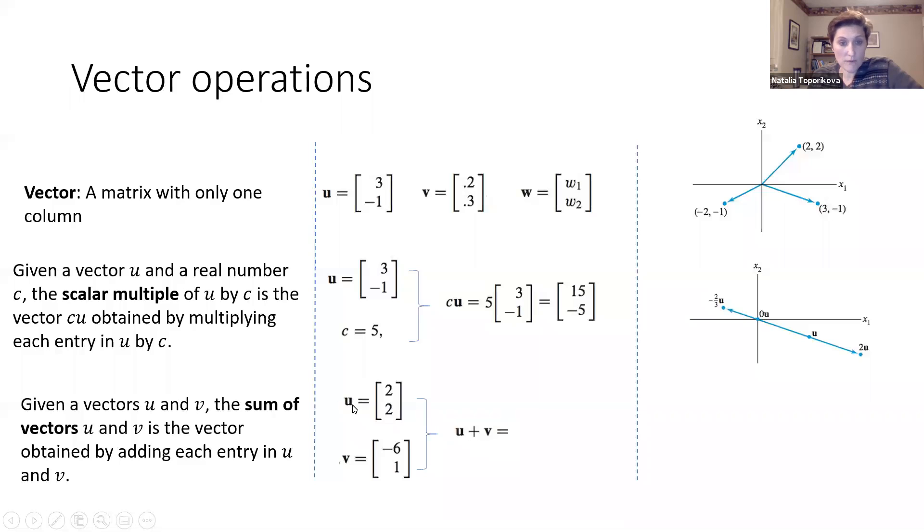For example, if we take vectors u and v and add them together, we just take the first component of vector u and add the first component of vector v. Two minus six gives us -4, and we do the same for the second component. Second component of vector u plus second component of vector v: two plus one gives us three. Usually everybody enjoys the sum of vectors. I think it's honestly pretty pleasing.